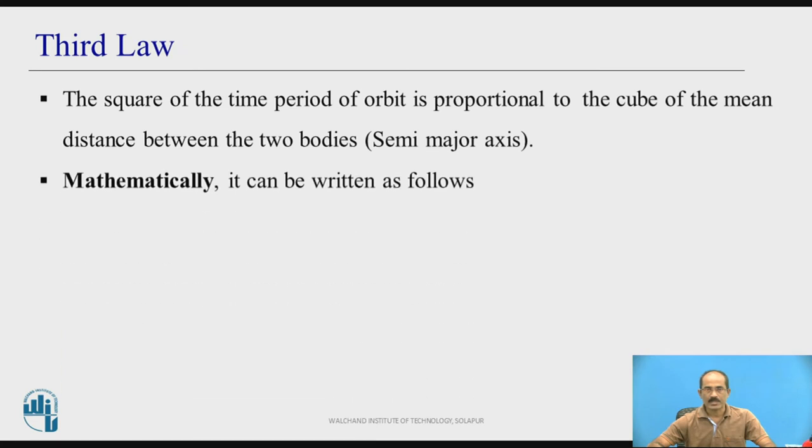Mathematically, it can be written as T² is proportional to A³. Here T is time taken to complete one path or time period, and A is semi-major axis. T² is proportional to A³.